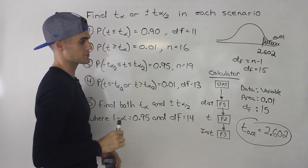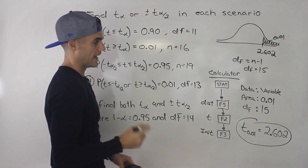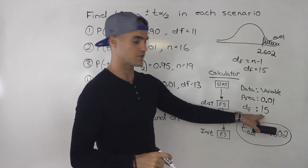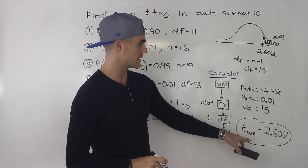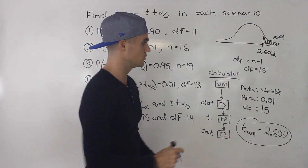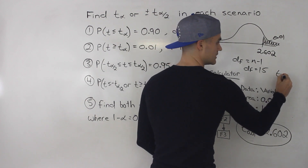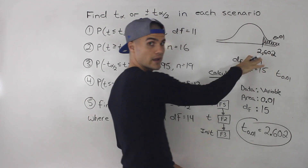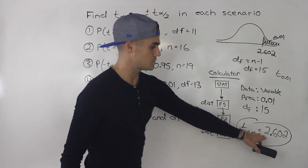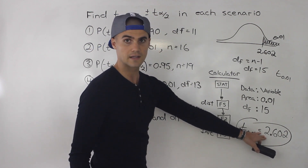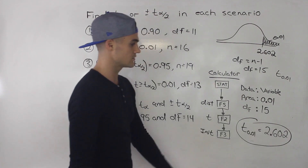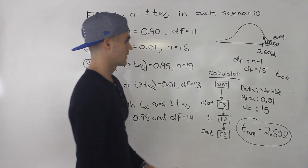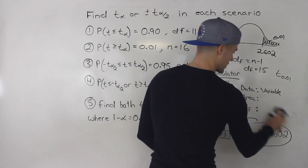If you look that up in the table with degrees of freedom 15 and t of 0.01 — the area to the right — you would see that the t value is 2.602. Okay, moving on to number three.